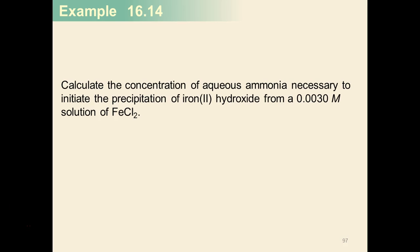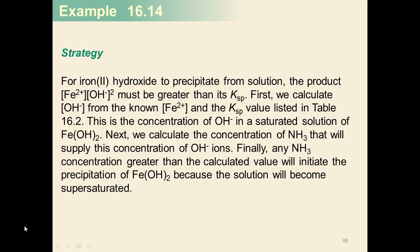The final example of this section involves calculating the concentration of aqueous ammonia necessary to initiate the precipitation of iron(II) hydroxide from a 0.003 molar solution of iron(II) chloride. The strategy is: for iron(II) hydroxide to precipitate, the ion product — the concentration of the cation times the concentration of the anion squared — must be greater than the Ksp. If that value exceeds the Ksp, the solution will respond by decreasing solubility and forming a precipitate.